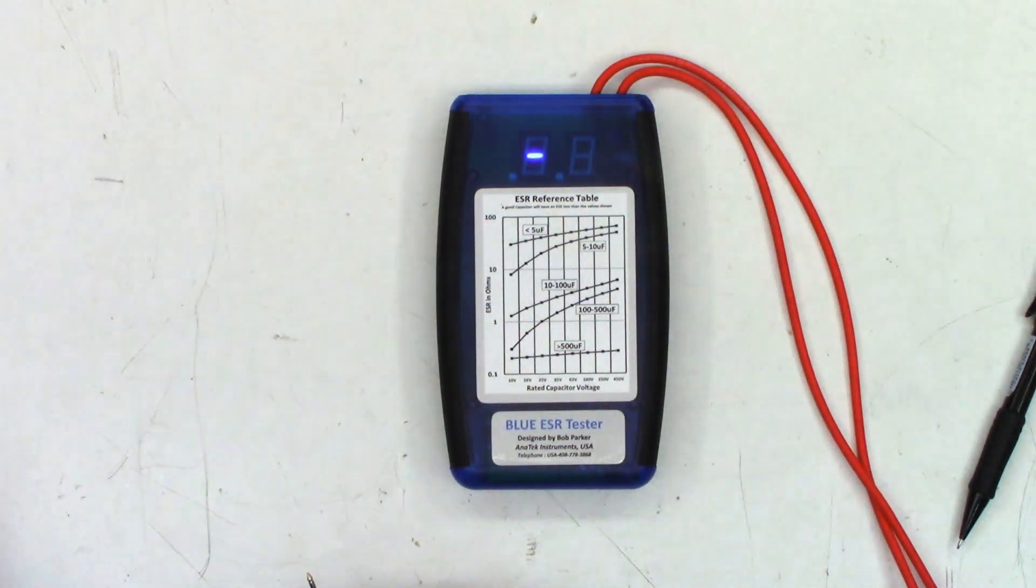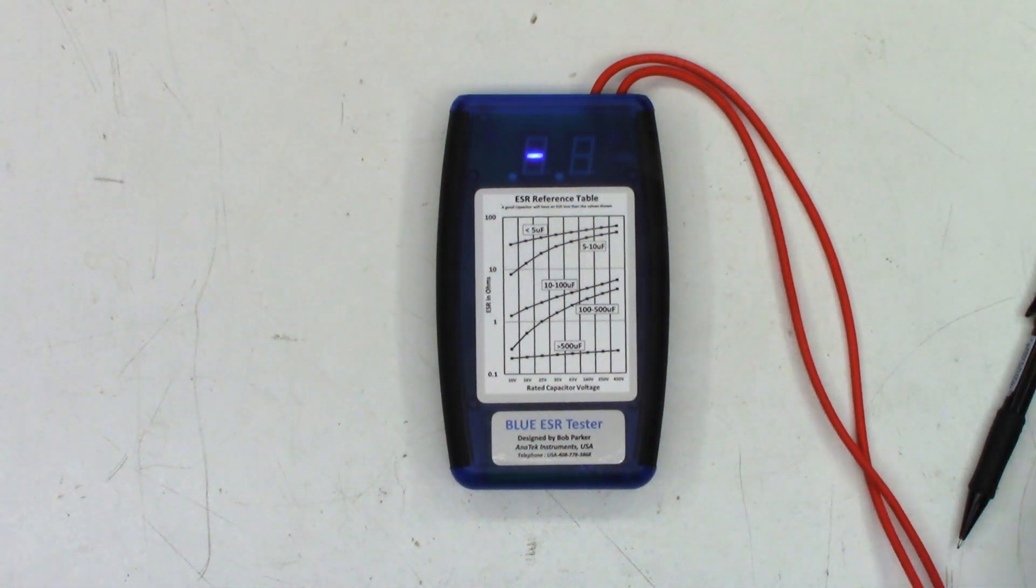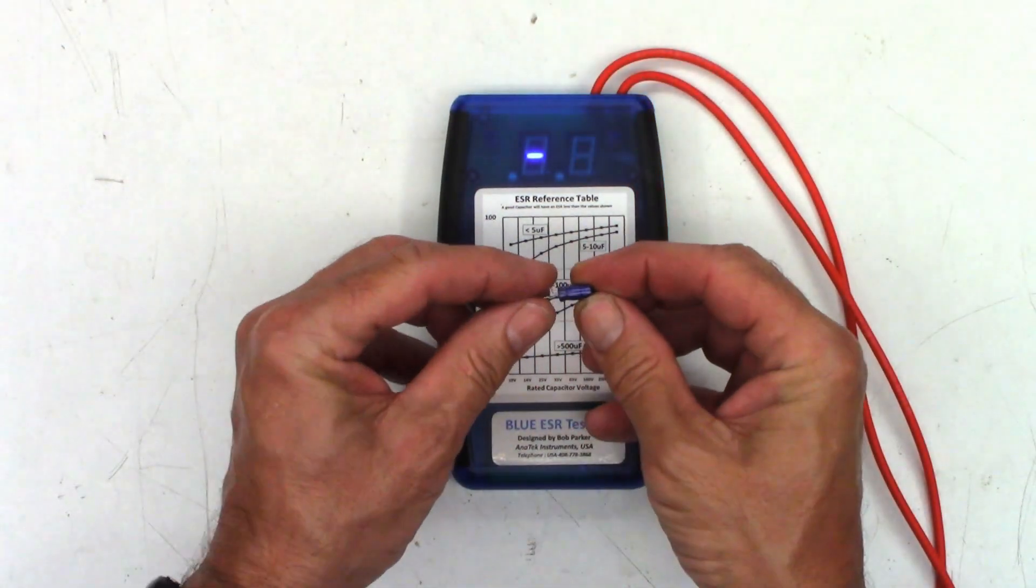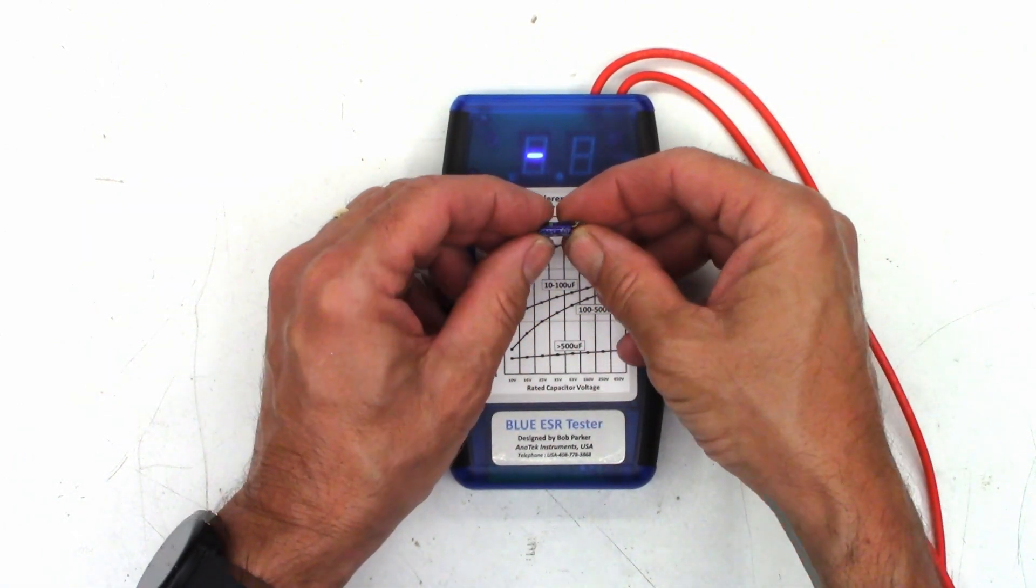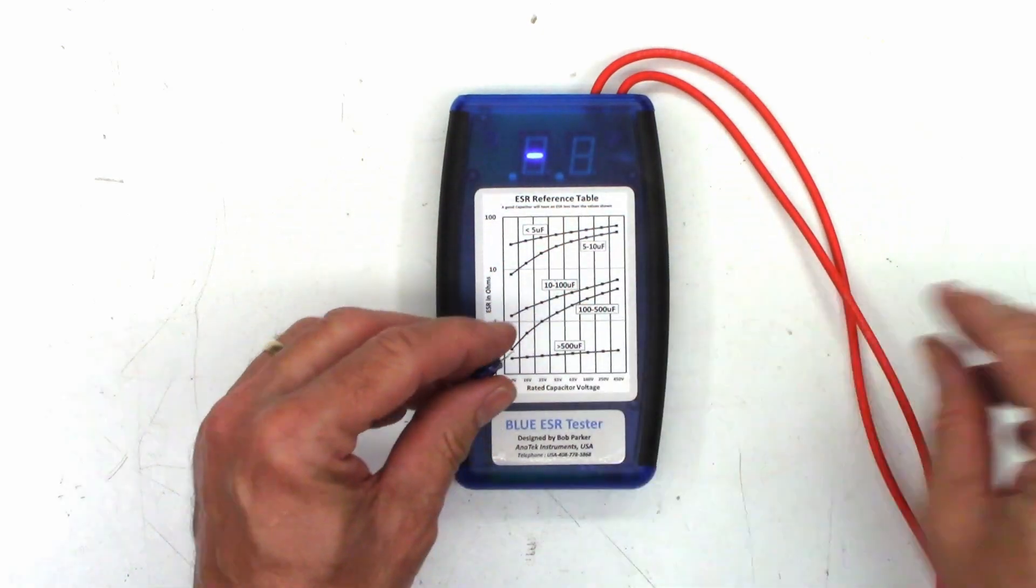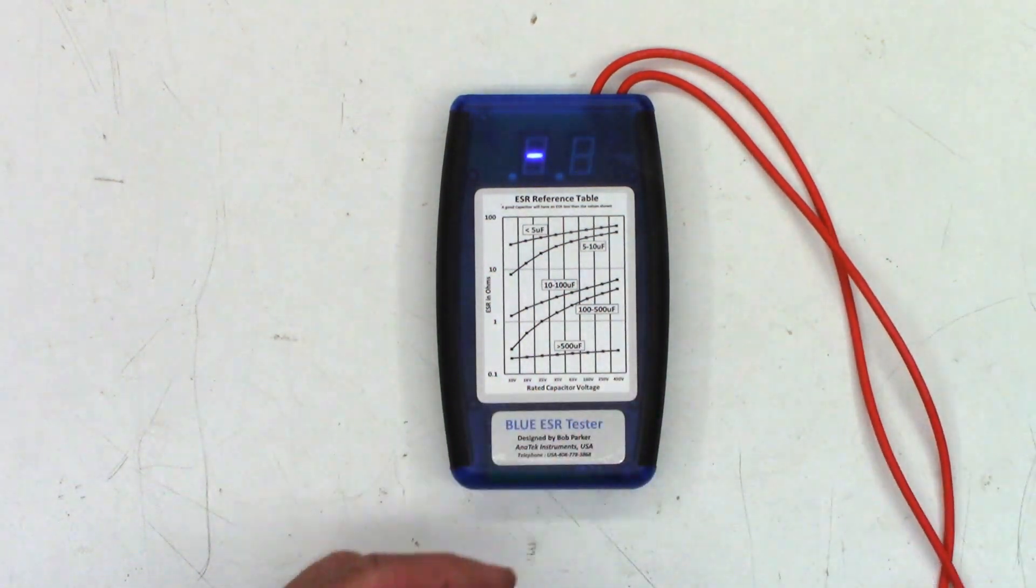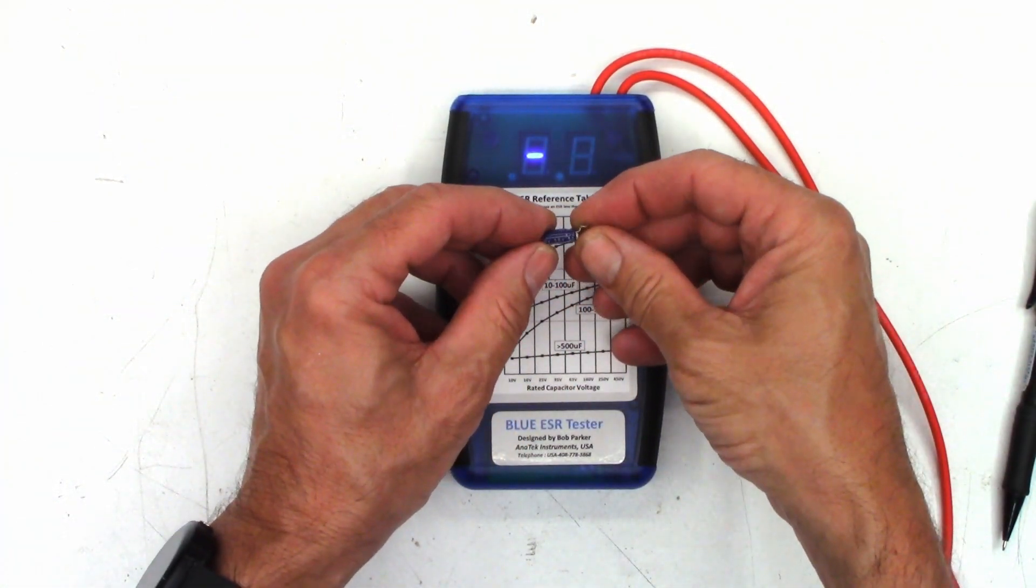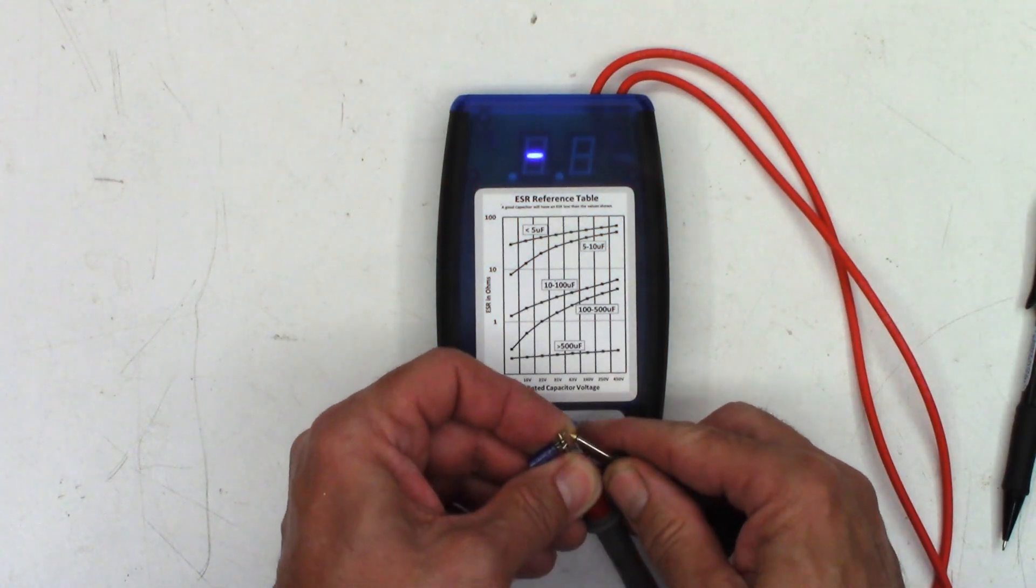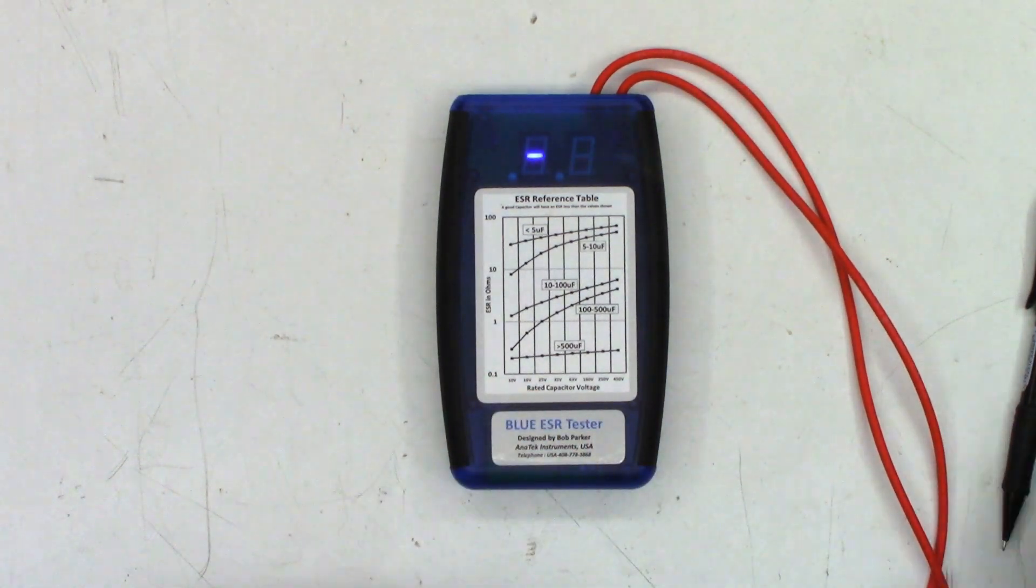Now I've got four of these Nichicons, they're all 22 microfarad at 35 volts. Absolutely no reading on that one whatsoever. Nothing on that one as well. Won't even read it. And absolutely open on that one. So those are all going to be dashes. Now I've got another Samwa, this one is a one microfarad 50 volt capacitor. This is number 12 and I read 37 ohms on that one. And yet another Samwa, this one is a 10 at 50 volts, and I get nothing.